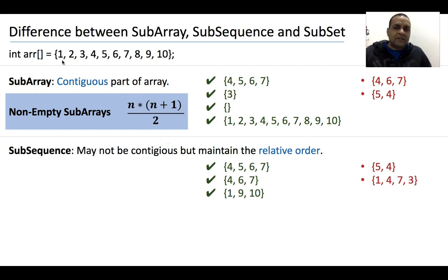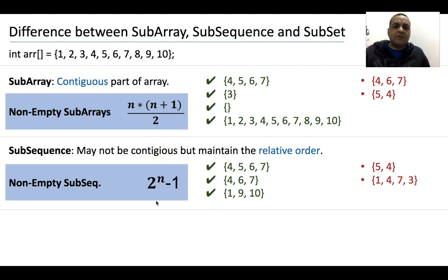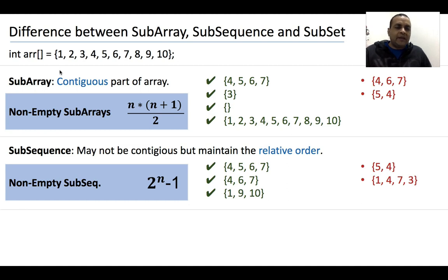The total number of subsequences for an array of n elements is 2 raised to the power n. Total number of non-empty subsequences is 2^n minus 1. You can think of it this way: at each element we have two choices — either include that element or exclude it — so at each element we have two options, giving 2^n total subsequences.